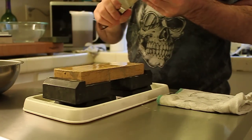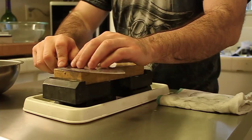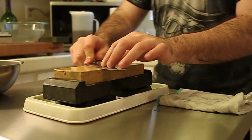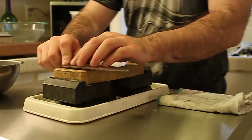Doing the micro bevel is going to flip the burr back onto the other side of the knife and so you'll need to remove it. And generally speaking, I do edge trailing strokes to do this.